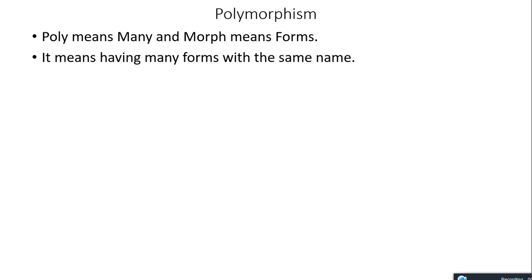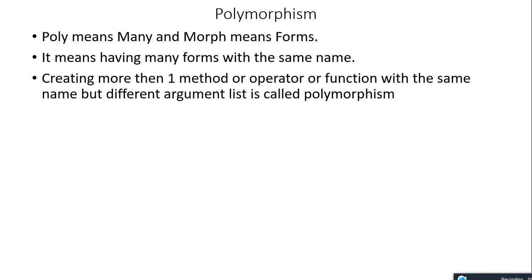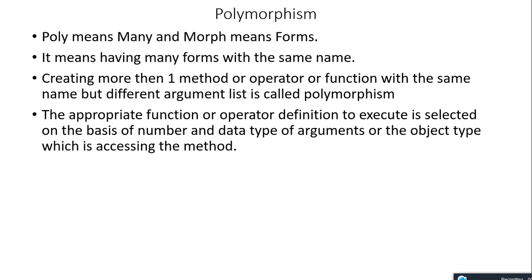Having many forms with the same name — creating more than one method, operator, or function with the same name but different argument list — is called polymorphism. The argument list difference is important so that the compiler or at runtime we know which function definition to execute when the function is called. The definition is selected by matching the number of arguments as well as the data type of the arguments passed during the function call.